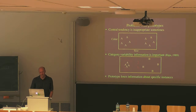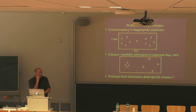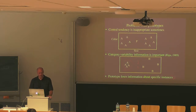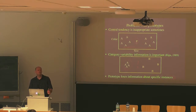Perhaps the deepest problem with prototypes is that the prototype representation discards a lot of information about specific instances. If the population isn't normally distributed, the central tendency is a poor summary. This insight — why not represent the entire distribution itself? — is the basic inspiration for the exemplar model.